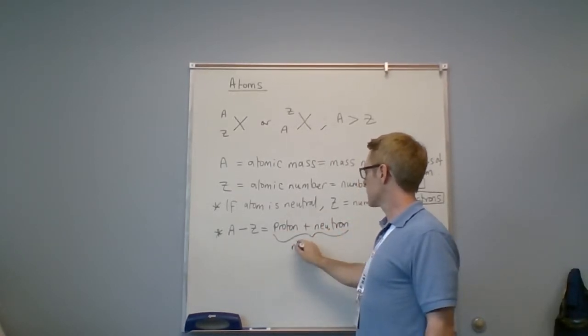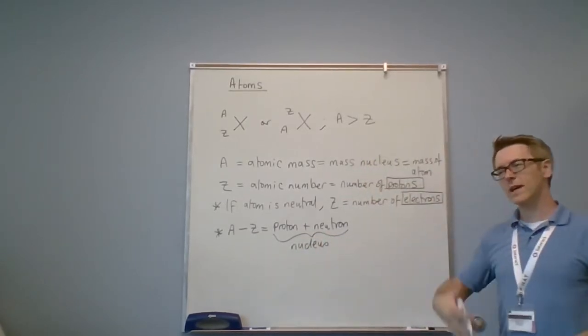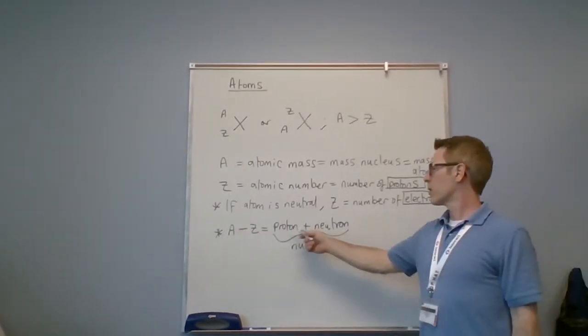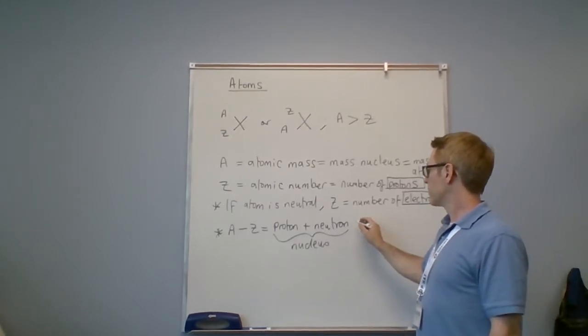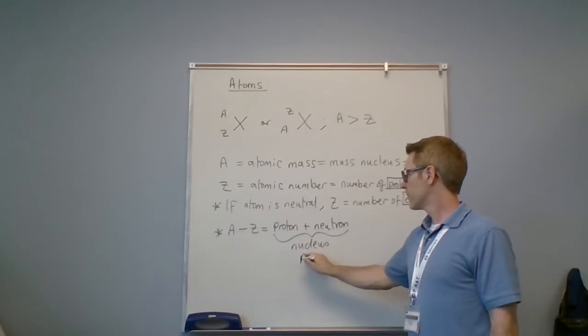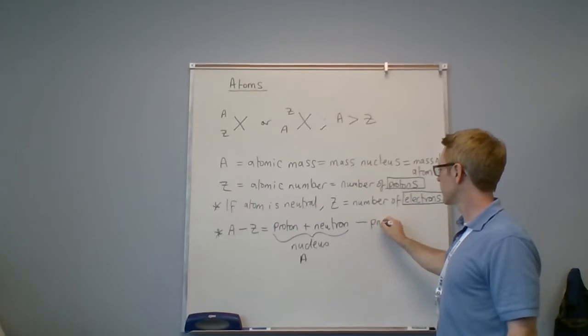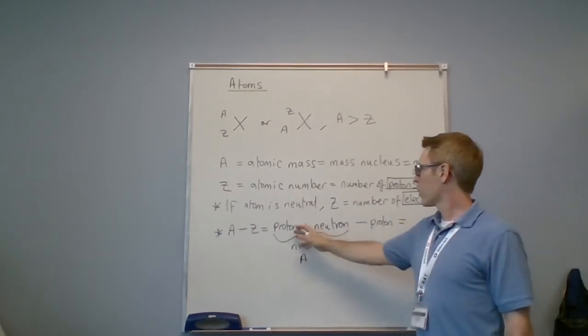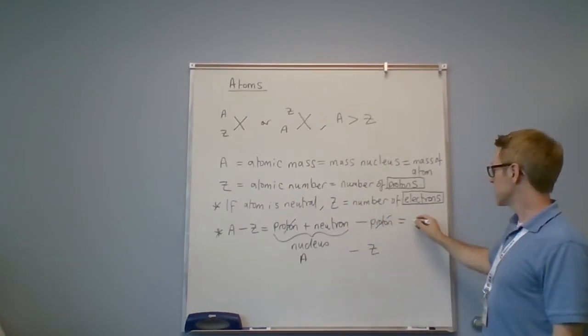So this is inside what's called the nucleus. This constitutes the nucleus—there's no inside the nucleus, you're either part of the nucleus or not. Protons and neutrons are the nucleus. Neutrons—so that's a minus Z. Well, proton minus proton, the protons cancel, and we can see that a minus Z is the neutrons.